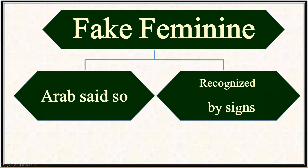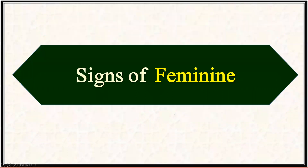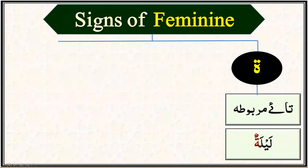Fake feminines can be further subcategorized: one type can be identified through signs, and the other type has no sign and must simply be memorized as groups that Arabs called feminine. The first sign which helps us identify the gender of an ism is the round ta at the end of the word, also known as ta marbuta. Example: laylatu. If a word has a round ta at the end, it is definitely a feminine noun.